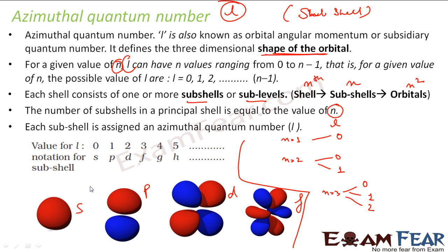0 means s, 1 means p, this shape. That means for 1 I will have only 1s. For 2 I will have 2s and 2p also, correct.